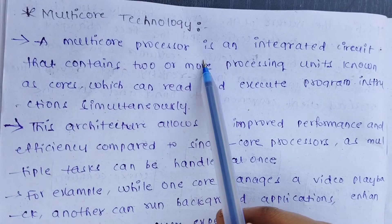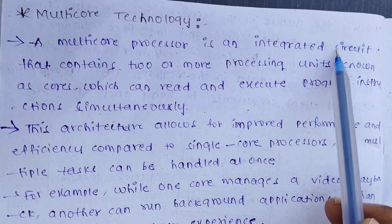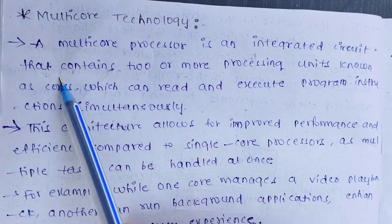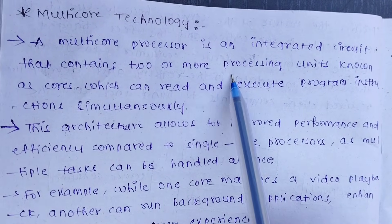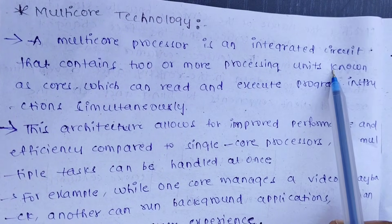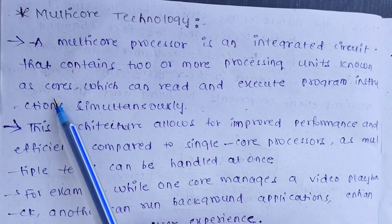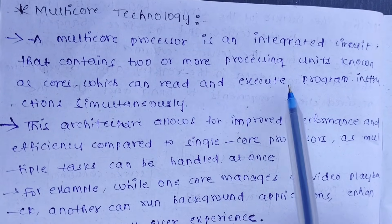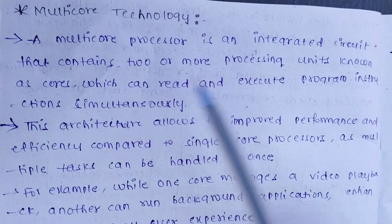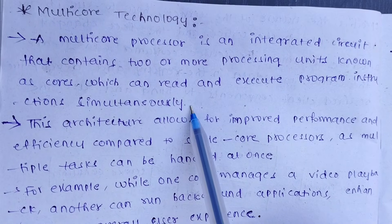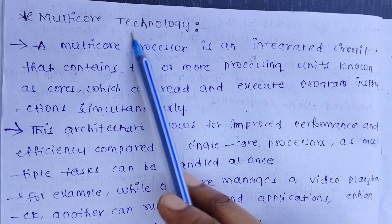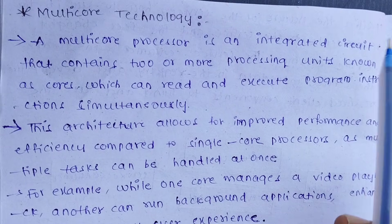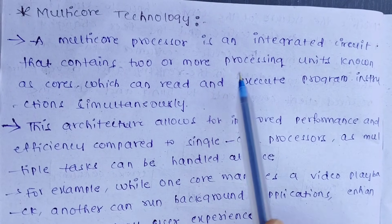A multicore processor is an integrated circuit that contains two or more processing units known as cores, which can read and execute program instructions simultaneously.